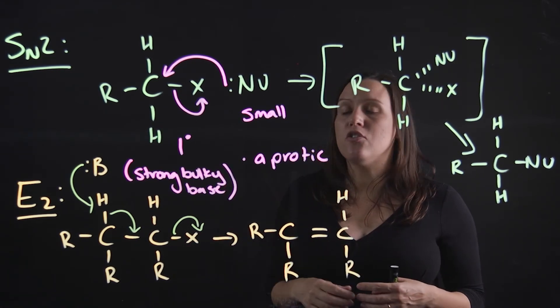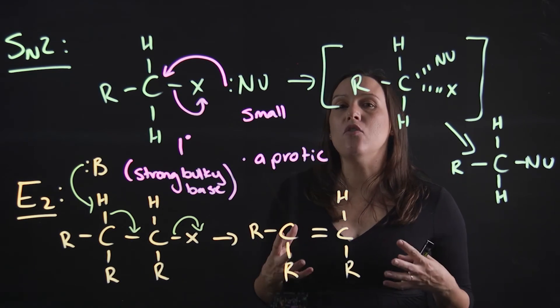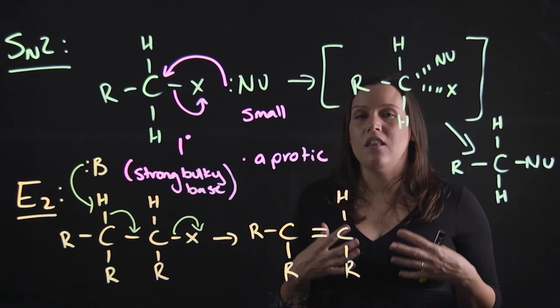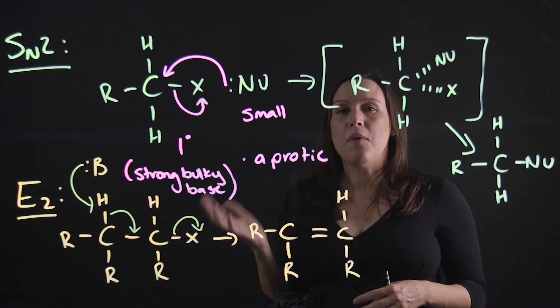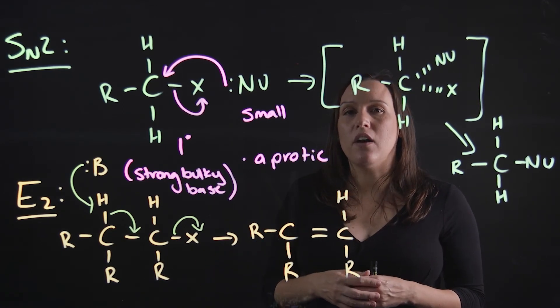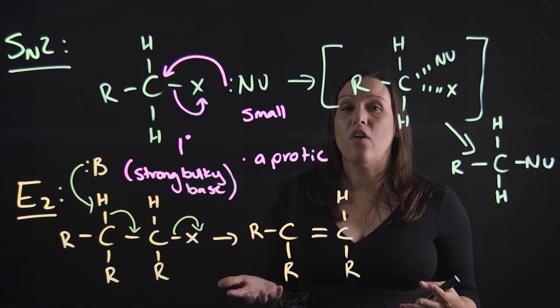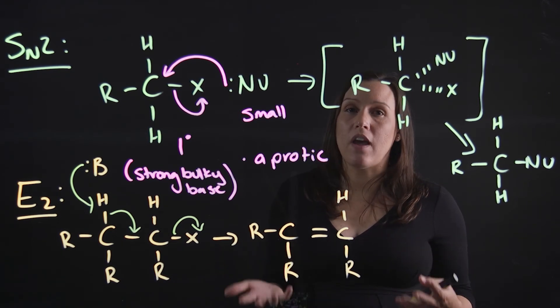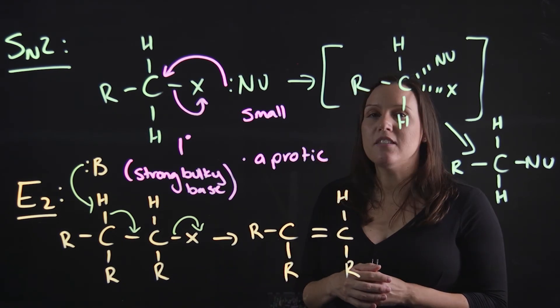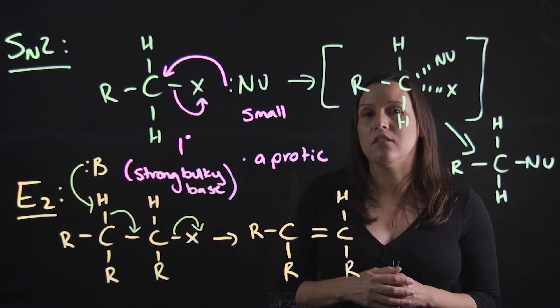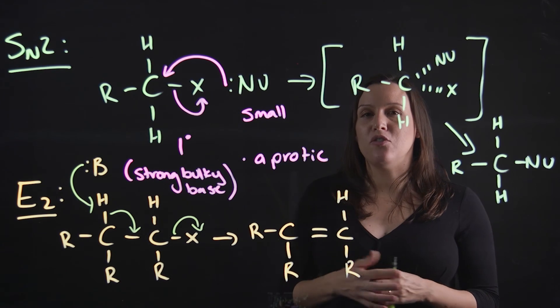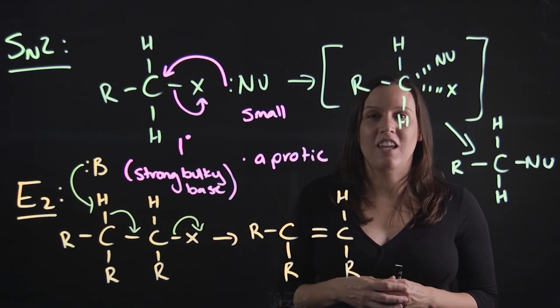So for these SN2s and E2s, we really need a solvent that doesn't hinder the nucleophile or the base doing what it needs to do. In comparison to the SN1 and E1, aprotic solvent is fine. Aprotic solvent is more favored. So hopefully that helps you with practicing your questions for SN1, E1, SN2, and E2 elimination. Thank you.